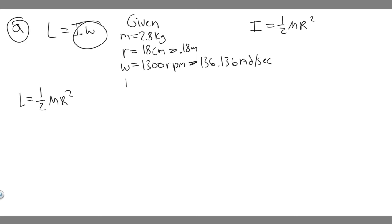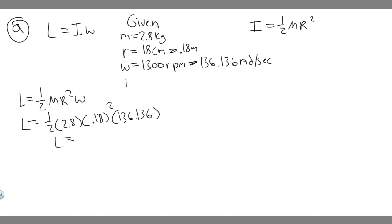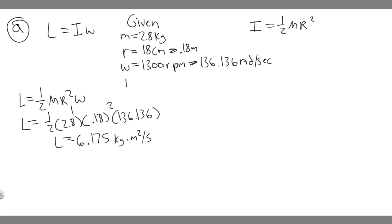Now we can plug everything into L equals one half m r squared times omega. That's 0.5 times 2.8 times 0.18 squared times 136.136. Calculating this gives 6.175. The units work out to kilogram meters squared per second, because radians are dimensionless. So the angular momentum is 6.175 kg·m²/s, which you can round to 6.2 depending on your teacher's preference. That's the answer to part A.